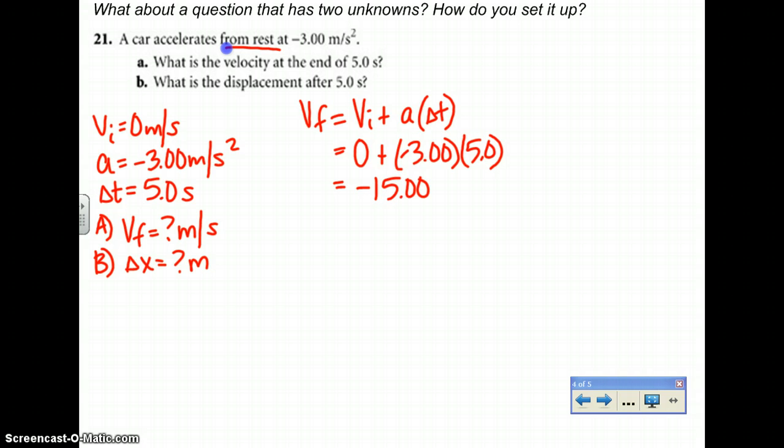From that then, looking at your givens, the least amount of sig figs that you have here is two sig figs. So your final velocity is negative 15 meters per second. Box it. And now, let's move on to B.